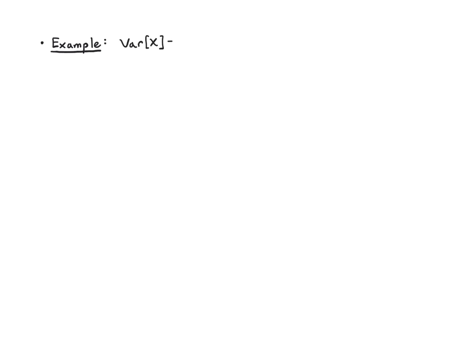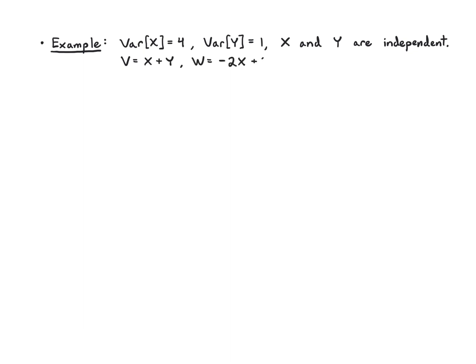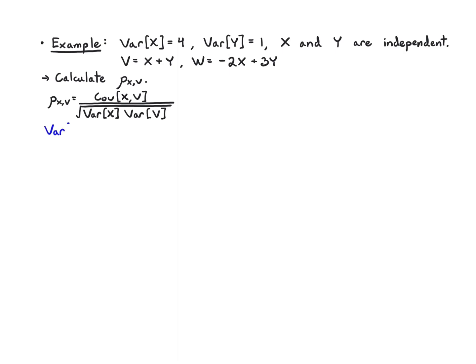Let's work out a longer example. We're given that the variance of x is 4, the variance of y is 1, and that x and y are independent — no further information about the distribution is needed. We define two linear functions: v = x + y and w = -2x + 3y. We want to find the correlation coefficient between x and v, and between v and w.